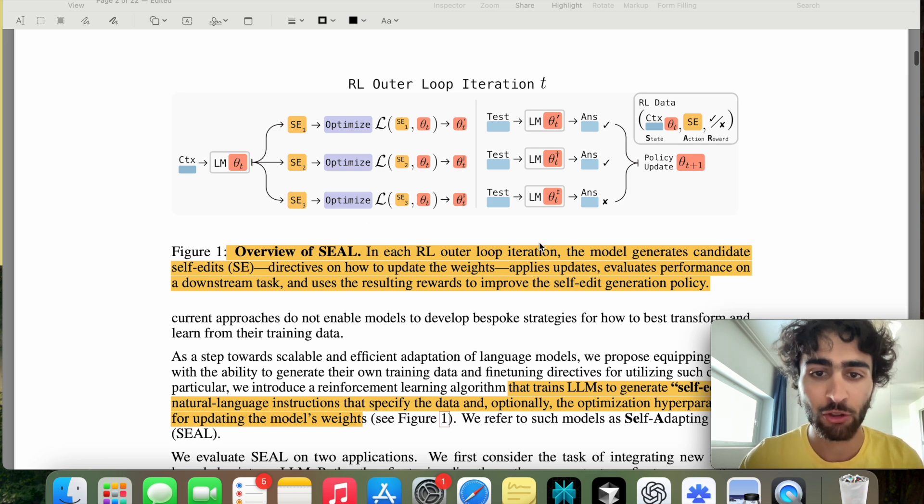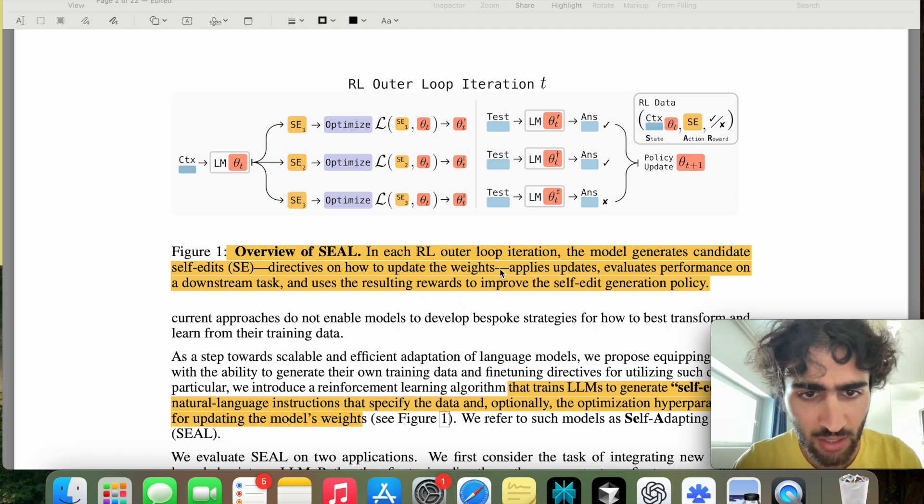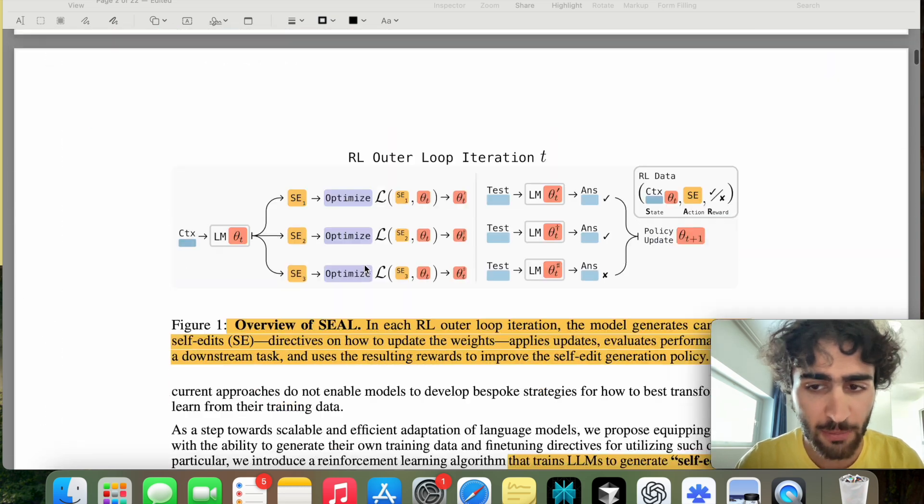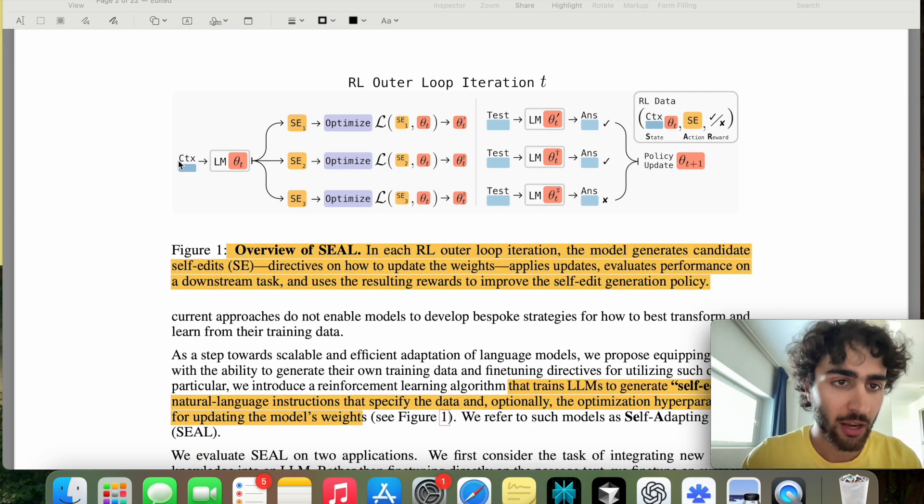So it says, in each RL outer loop iteration, the model generates candidate self-edits, which would be those study notes that I just mentioned in the ChatGPT interpretation. And then after this, directives on how to update the weights, then it applies the updates and evaluates performance on a downstream task, and then uses the resulting rewards to improve the self-edit generation policy. So I'm not sure that we have an analogous thing to directives on how to update the weights here. Yeah, it's kind of skipped in the human example, but we'll see it in this context here.